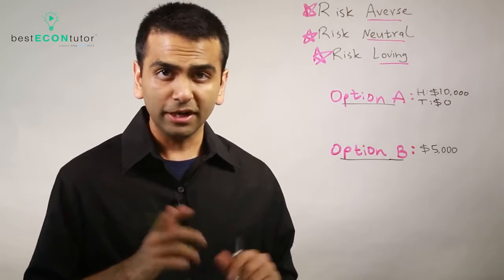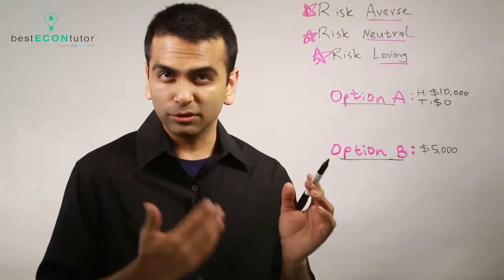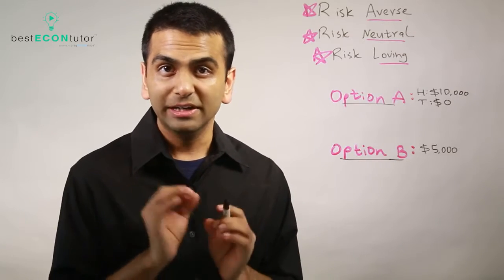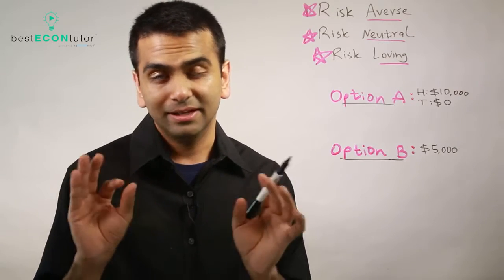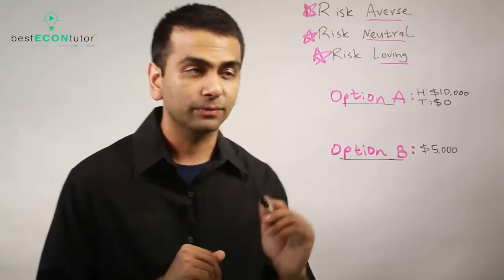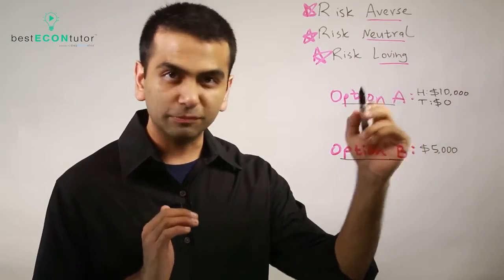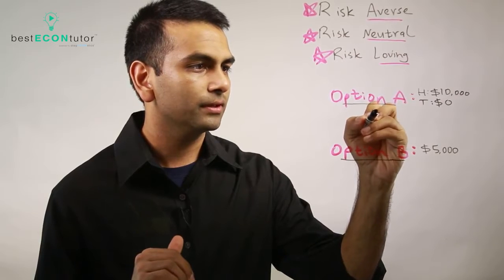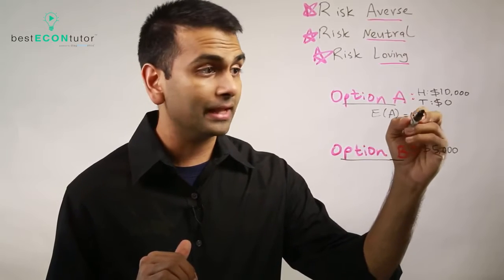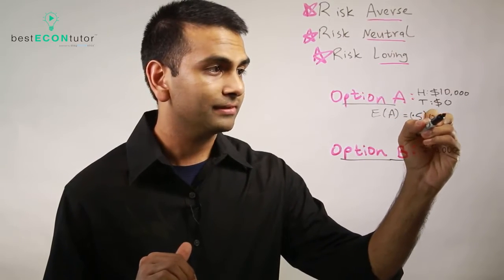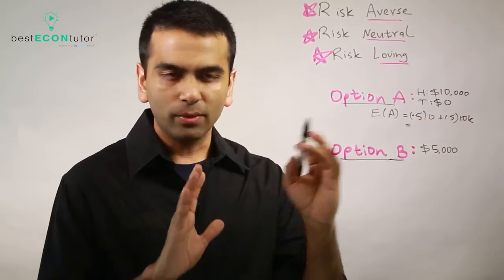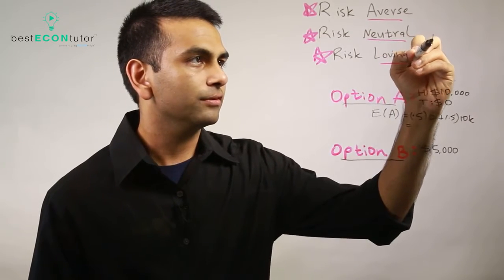One key thing you need to be able to calculate to determine someone's risk profile is the expected value — it's really a fancy way of saying the average. For Option A, the expected value is: fifty percent of the time you get zero dollars, so 0.5 times zero, plus fifty percent of the time you get ten thousand.